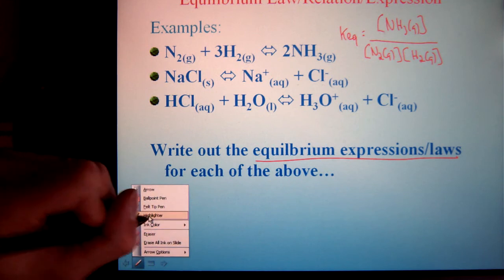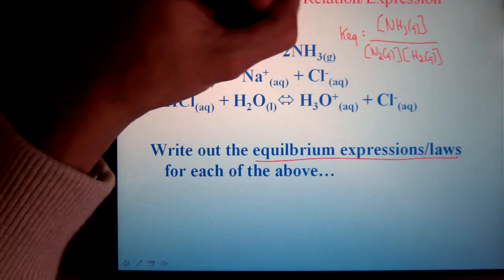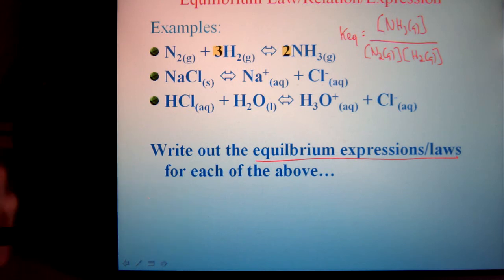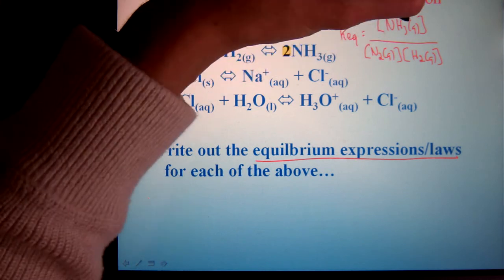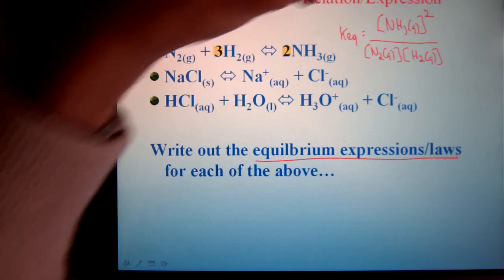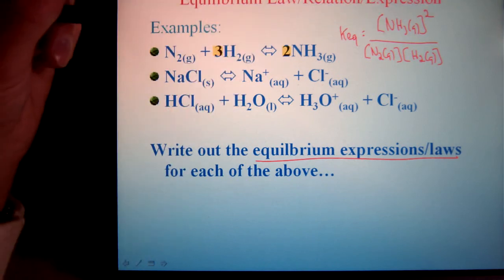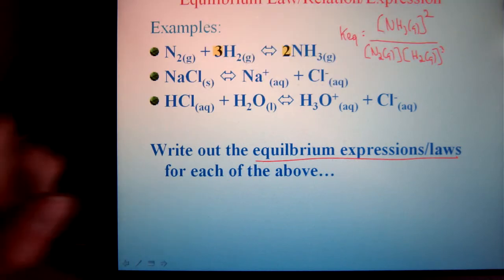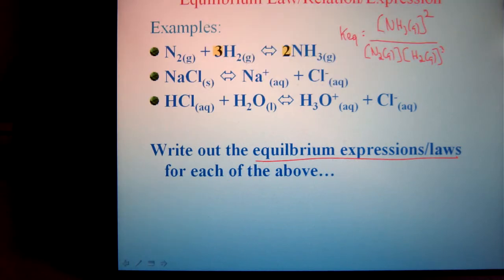So what's missing here? Well, we don't have the coefficients involved. These coefficients of each of the terms become exponents in your Keq expression. So we're going to have to square the ammonia. Nitrogen is just a 1, so we leave it alone. And then hydrogen would be cubed. That's all there is to determining equilibrium expression.